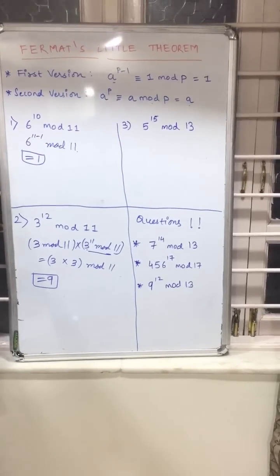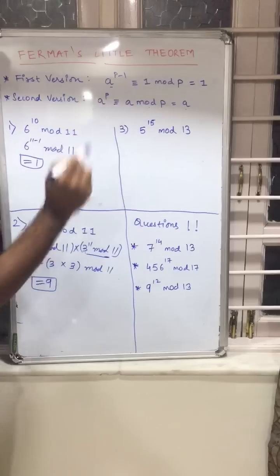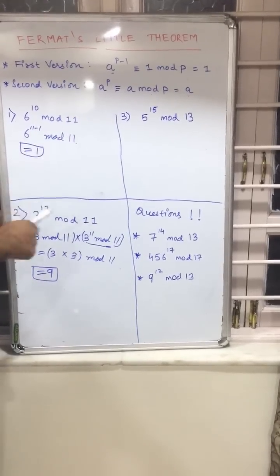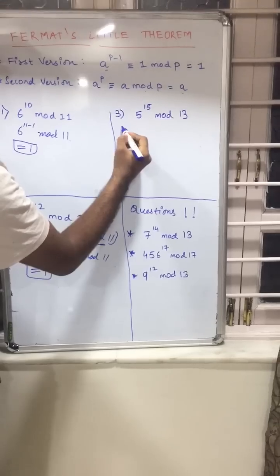Now let us move to the third example which says that 5 raised to 15 mod 13. Again it is not very easy, we have to put our mind into this.